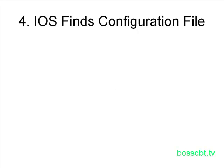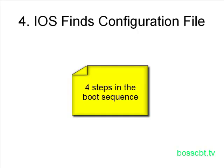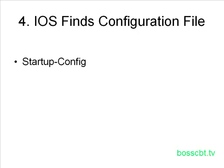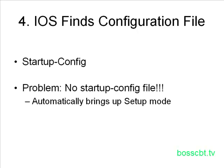We're at step four now, and this is the last step — there are a total of four steps in the boot sequence. Here, the iOS looks for a configuration file, specifically the startup config file. This is where all the router configurations are stored, telling it how you want it to run. A problem at this step is that there's no startup config file. That may be okay if it's a new device or you deleted it on purpose; however, if you weren't expecting it, you've lost your startup config file and need to investigate. If there is no startup config file, you're automatically thrown into setup mode.